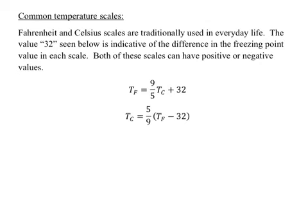Some common temperature scales include Fahrenheit and Celsius and they're traditionally used in everyday life. The value 32 seen below is indicative of the difference in the freezing point of each scale. The equation is TF equals 9/5 TC plus 32. If we think about the freezing point in Celsius, the freezing point in Celsius is zero, that's how the scale was made, and the boiling point is 100. Plug in a zero right here, this term cancels out and you get temperature in Fahrenheit equals 32, and that's the freezing point in Fahrenheit.